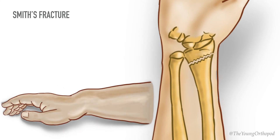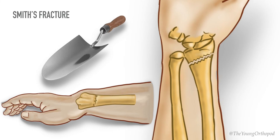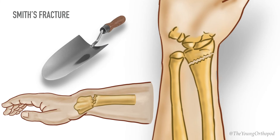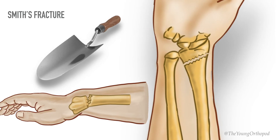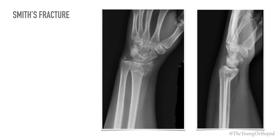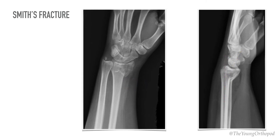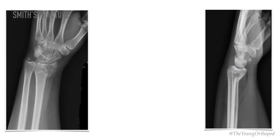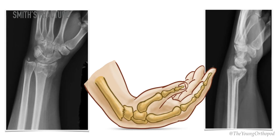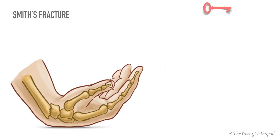Clinically, Smith's fracture has been described as a garden spade deformity. It is often referred to as a reverse Colles' fracture, since the deformity is opposite to Colles'. On an AP radiograph you can appreciate the fracture line at the corticocancellous junction and volar tilt on the lateral view. The mechanism of injury is a fall on the back of the hand — the patient falls on a flexed wrist with the forearm fixed in supination.